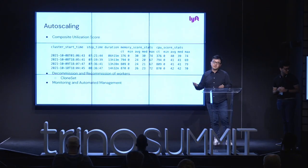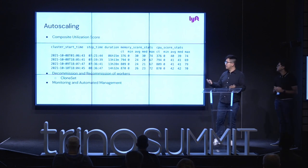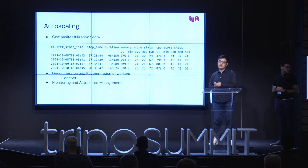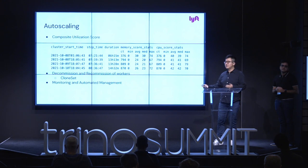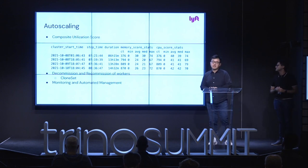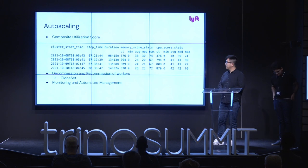Whenever something suspicious happens, if the autoscaler has the capability to understand the reason, it can take action: shutting down the worker, restarting the worker, or completely decommissioning some resources. That way we have no manual interaction at all, and we can solve tons of system internal errors within Trino automatically. We're still working on making it better next year.